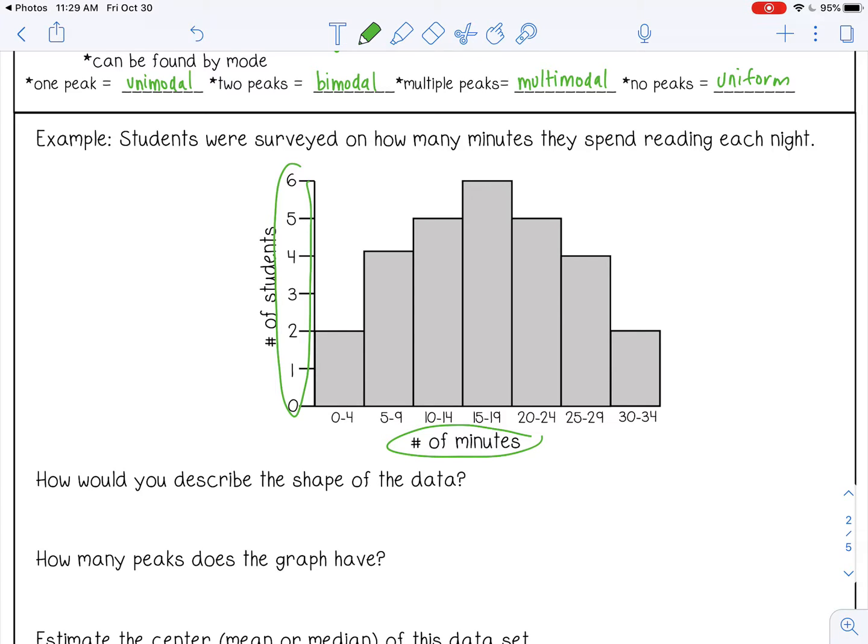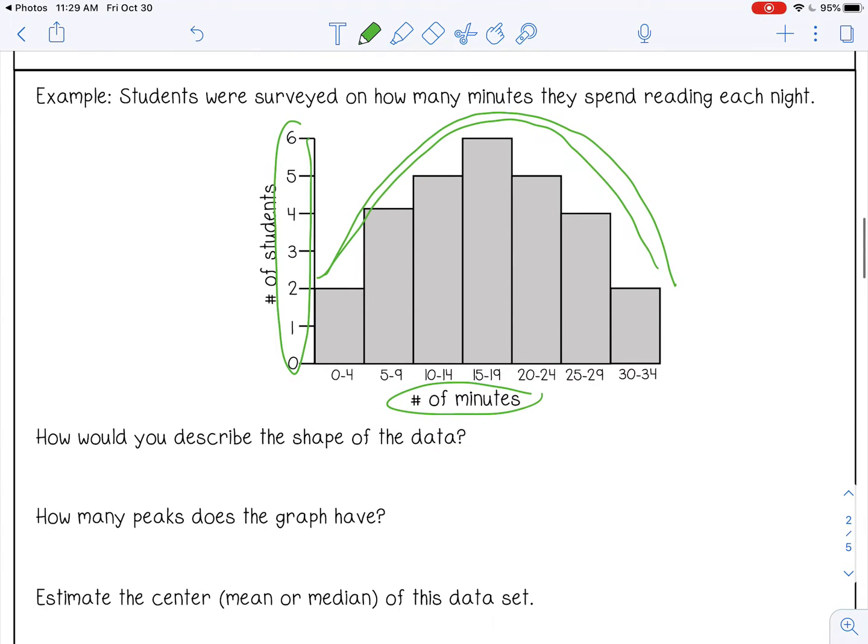So how would you describe the shape of the data? So there are words to describe the shape of the data, which we will get to next. But just by looking at this, it kind of looks pretty symmetrical or like a bell shape. So just kind of describe it in your own words. I'm going to put symmetrical.